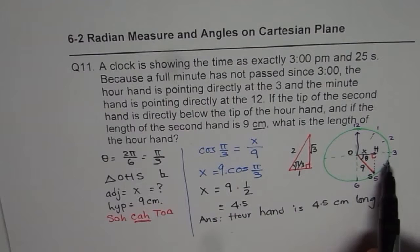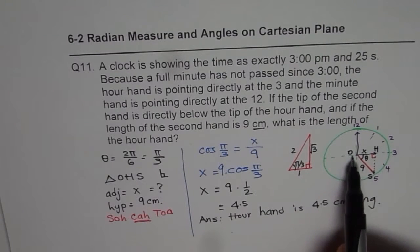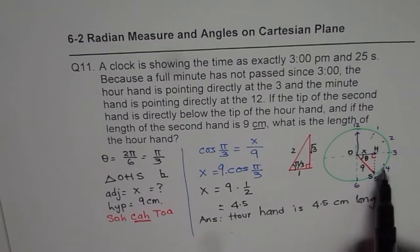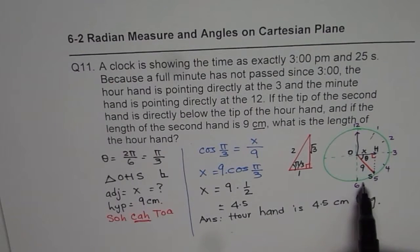We could find the angle because we knew that our hand is pointing at 3 and the second one is pointing at 5. So it is pi by 6 plus pi by 6, 2 pi by 6 or pi by 3. Then we can use right triangle and find the size of the triangle. So that is how it should be solved. Thank you.